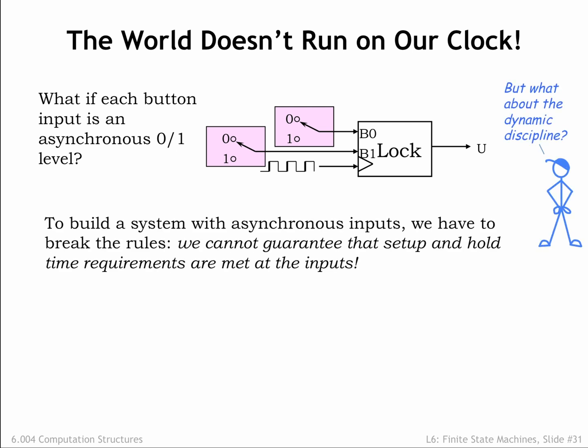As we saw at the end of chapter 5, to ensure reliable operation of the state registers, inputs to a sequential logic system have to obey setup and hold time constraints relative to the rising edge of the system clock. Clearly, if the input can change at any time, it can change at a time that would violate the setup and hold times.